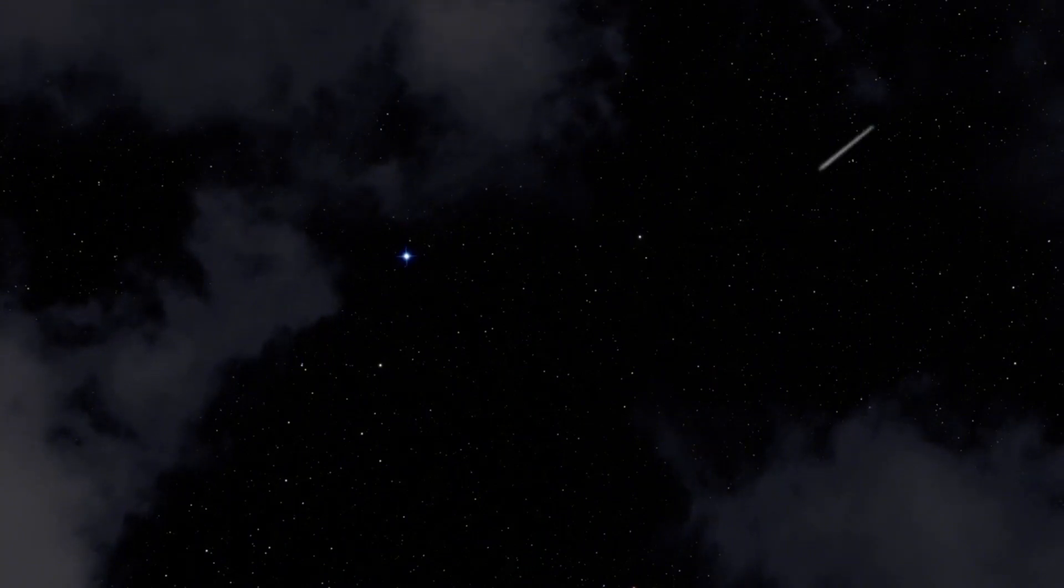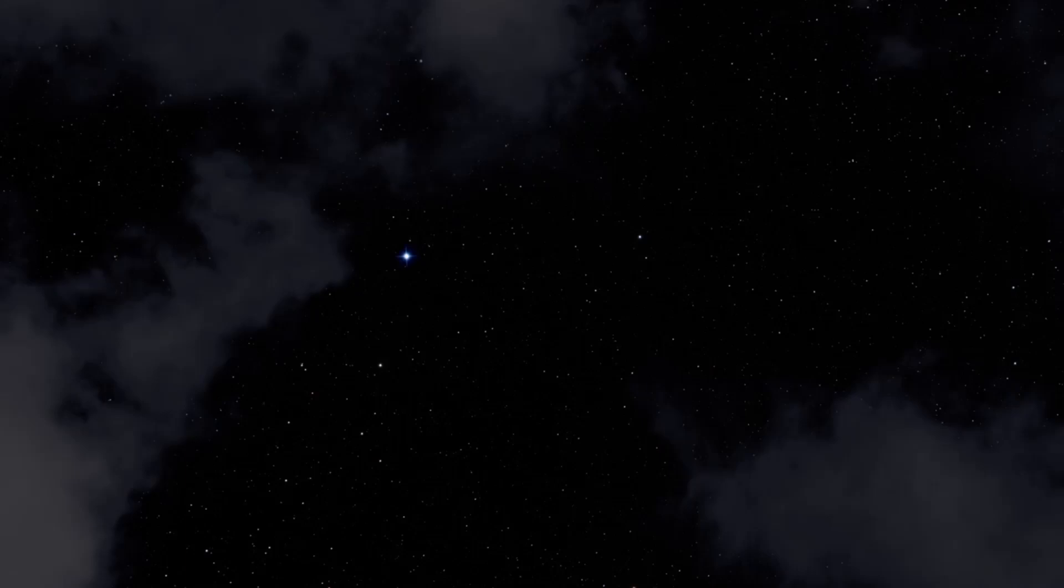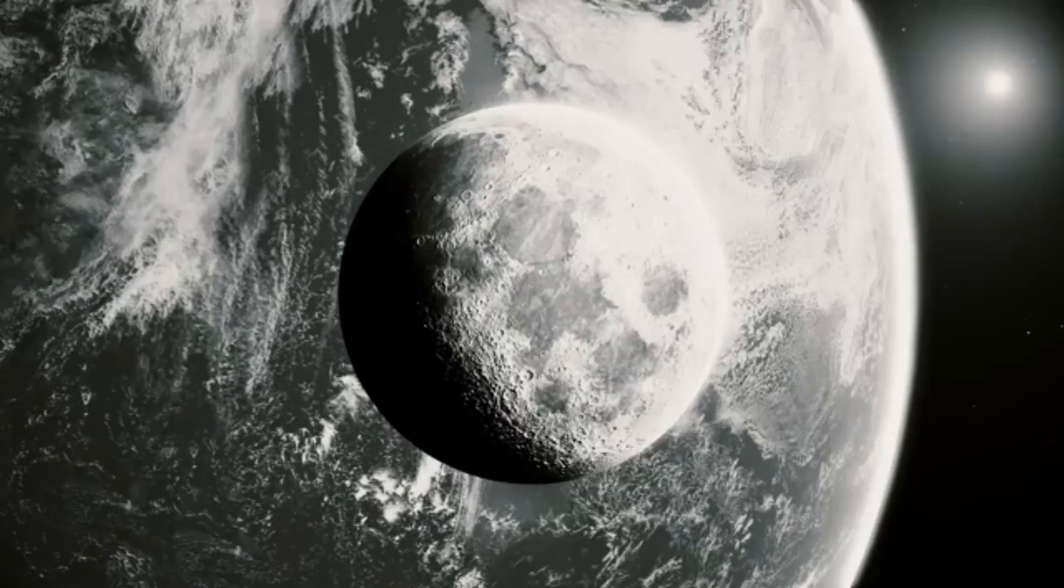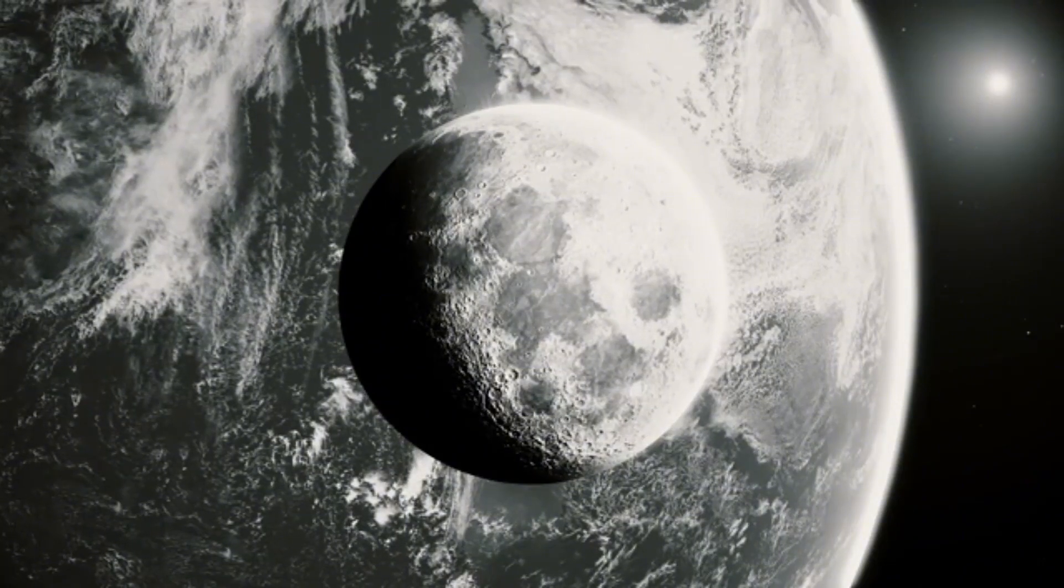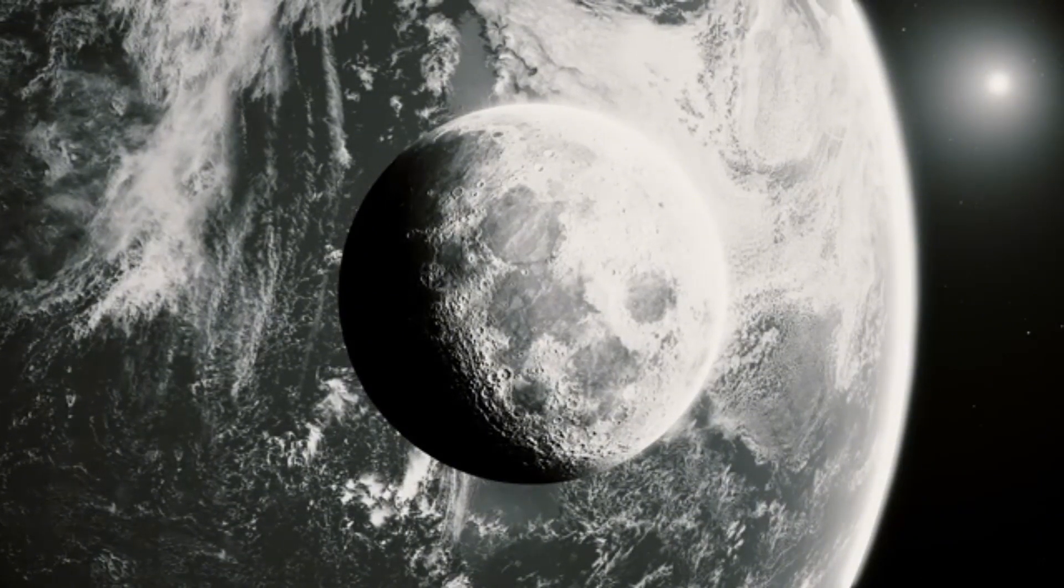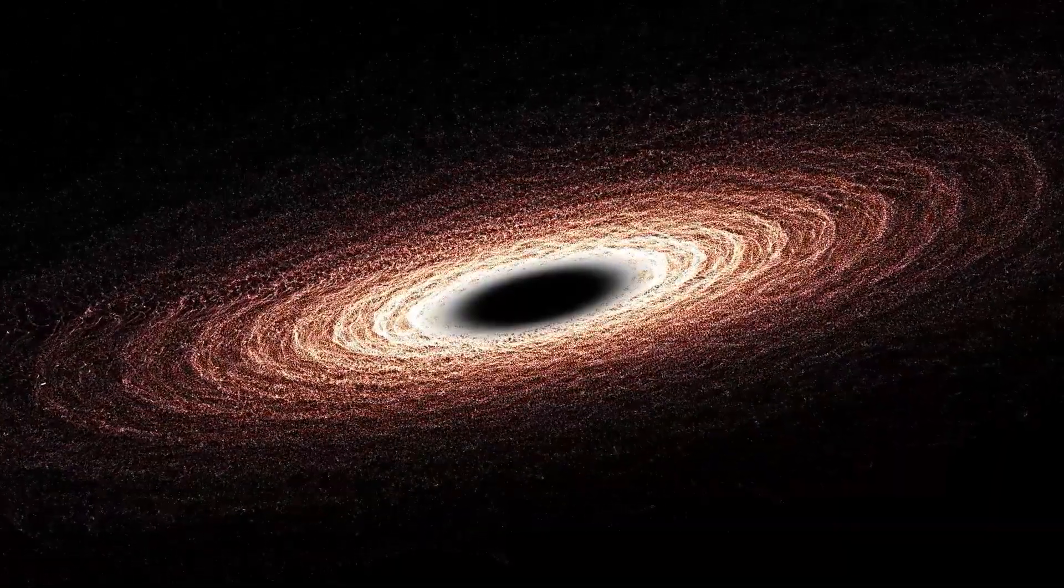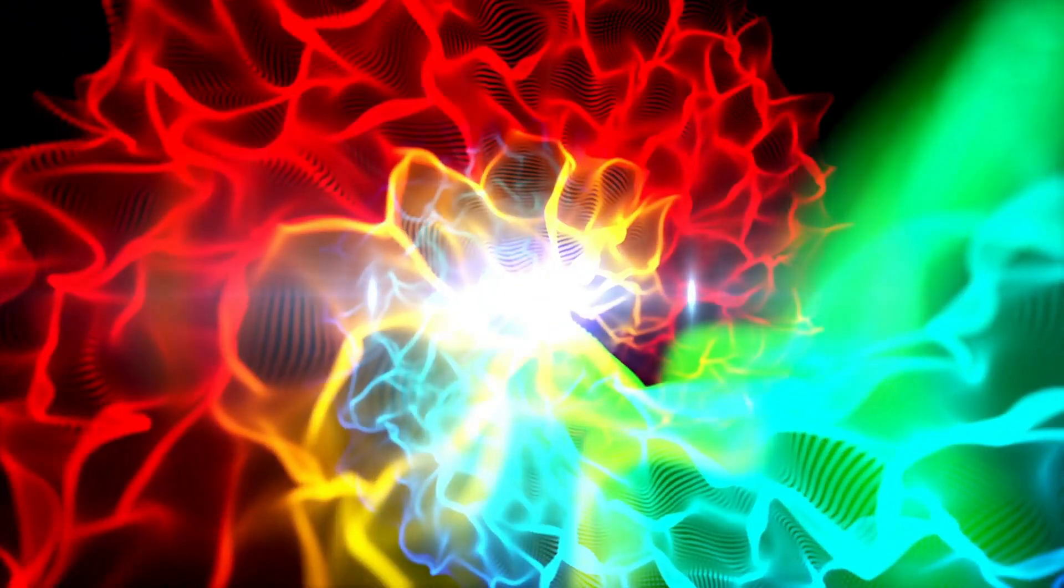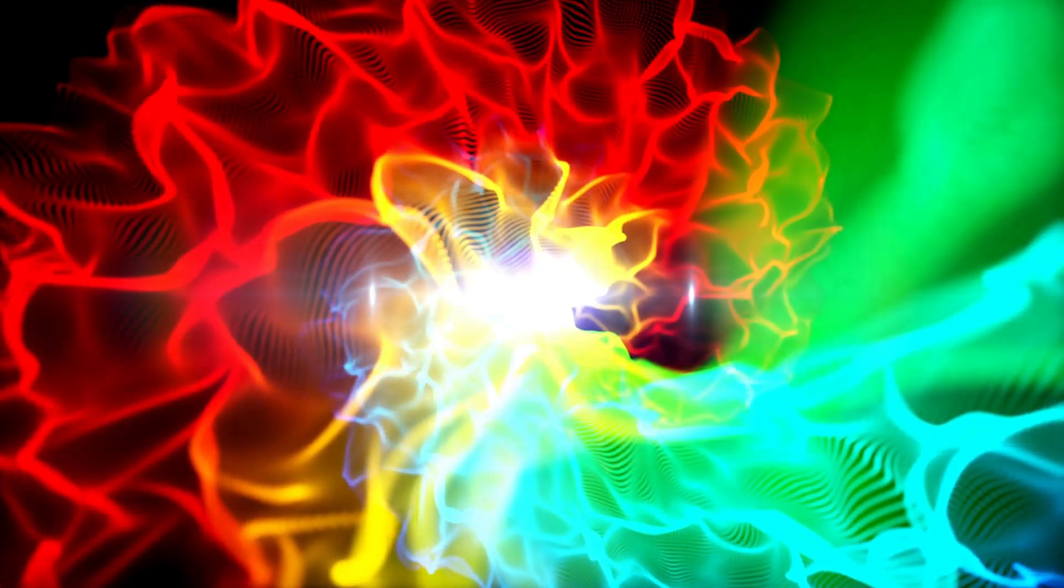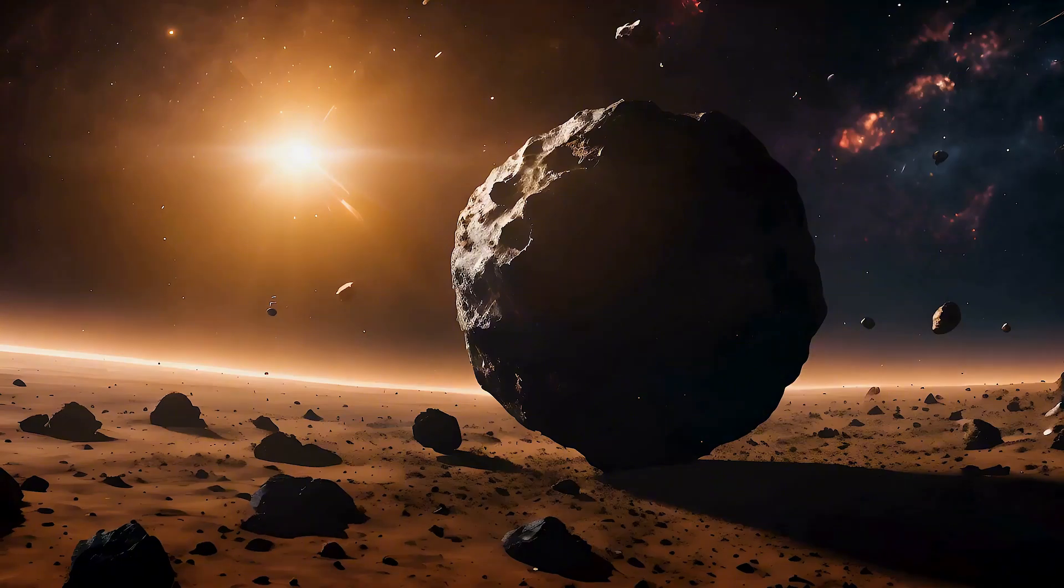The stability of Pluto's orbit amid these complexities is proof of the intricacies of celestial mechanics. The three-body problem in space involves determining how three objects in space, like Pluto, Neptune, and the Sun, move and influence each other with their gravity. It's like trying to predict where they will go based on where they started and how they pull on each other. For Pluto's case, this problem shows how its orbit, Neptune's orbit, and the Sun's gravity all work together in a complex manner.